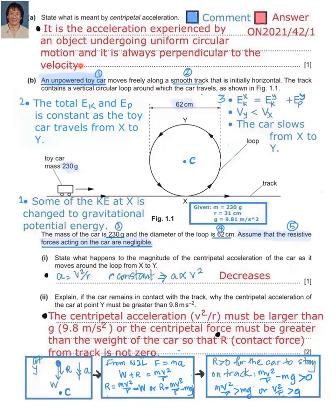In part B, an unpowered toy car moves freely along a smooth track that is initially horizontal. The track contains a vertical loop around which the car travels as shown in figure 1.1. The mass of the car is 230 grams and the diameter of the loop is 62 cm. Assume that resistive forces acting on the car are negligible. When you read this passage, you find there are at least 5 things you should underline. We will explain some of these things here in detail.